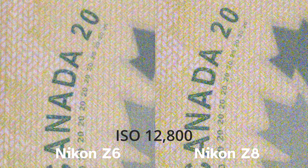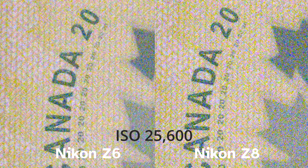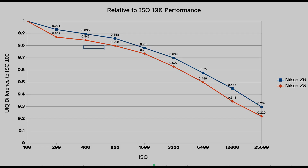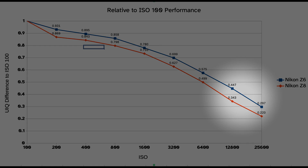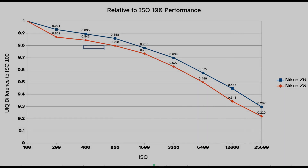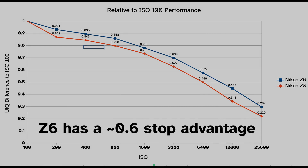Looking at two shots taken at ISO 12,800 with no noise reduction or sharpening applied, you can see that the Z6 shot looks cleaner with less noise. That's even more visible at ISO 25,600, which is the maximum native ISO for the Nikon Z8 — the Z6 looks cleaner than the Z8. According to the UIQ measurement against the base ISO 100 shot, using a linear scale between ISO 12,800 and ISO 25,600, the Z6 at ISO 25,600 performs about 0.6 stops better than the Z8 — about three-fifths of a stop.